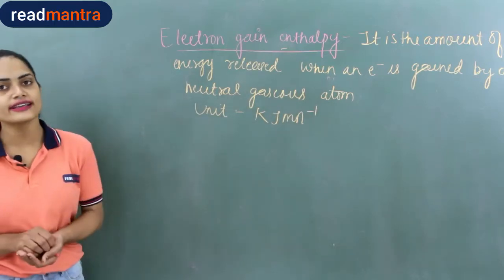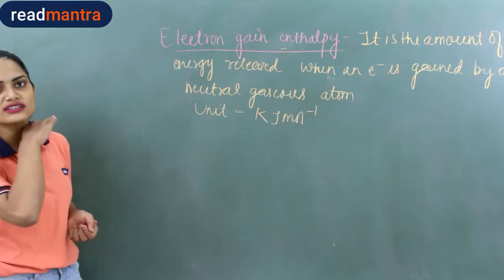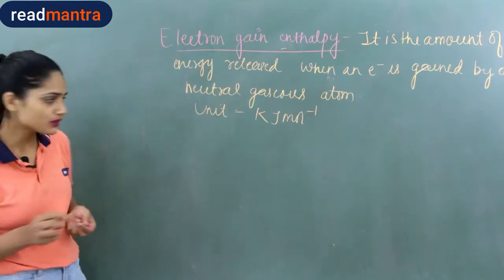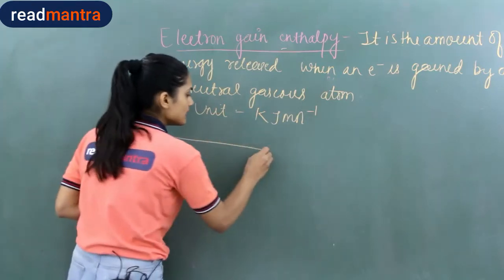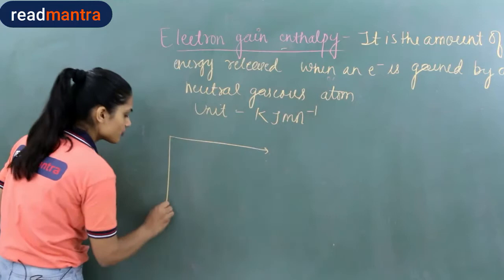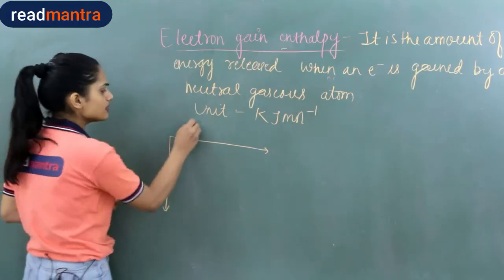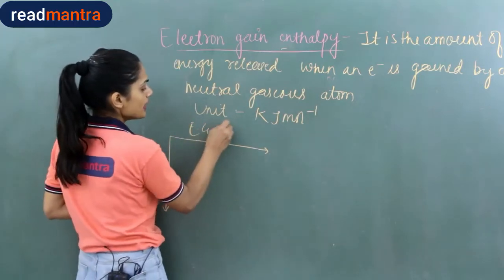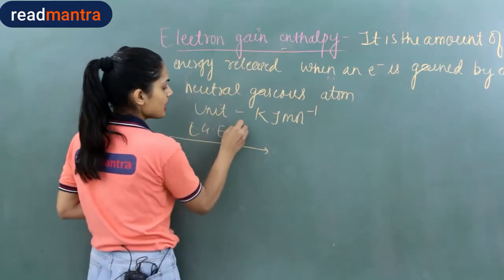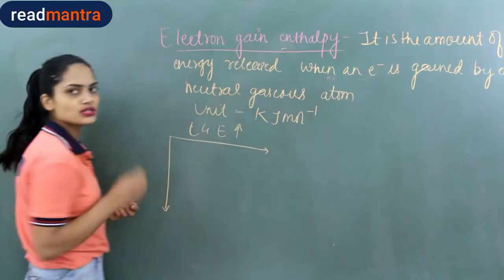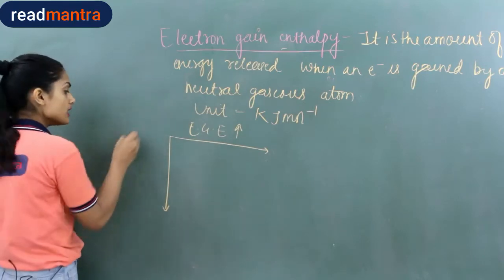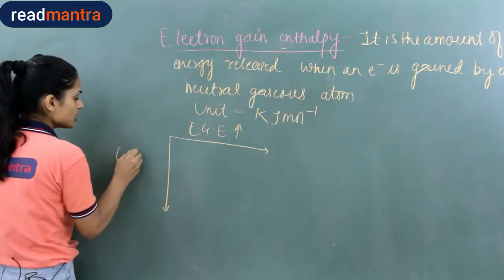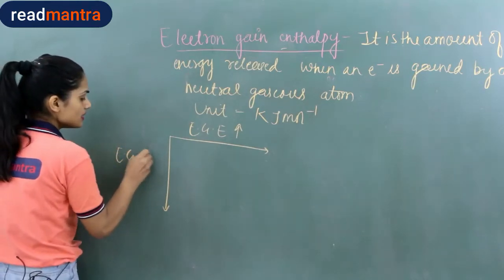What is the variation of electron gain enthalpy across the period and down the group? Across the period, electron gain enthalpy increases — it becomes more negative. Down the group, electron gain enthalpy decreases.